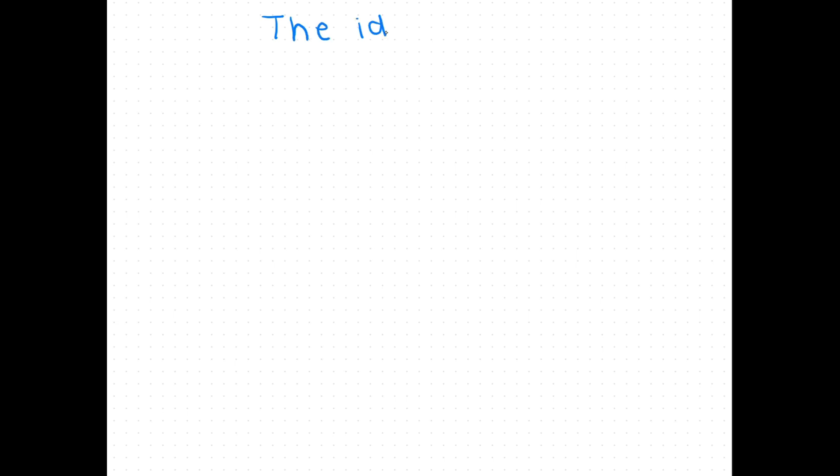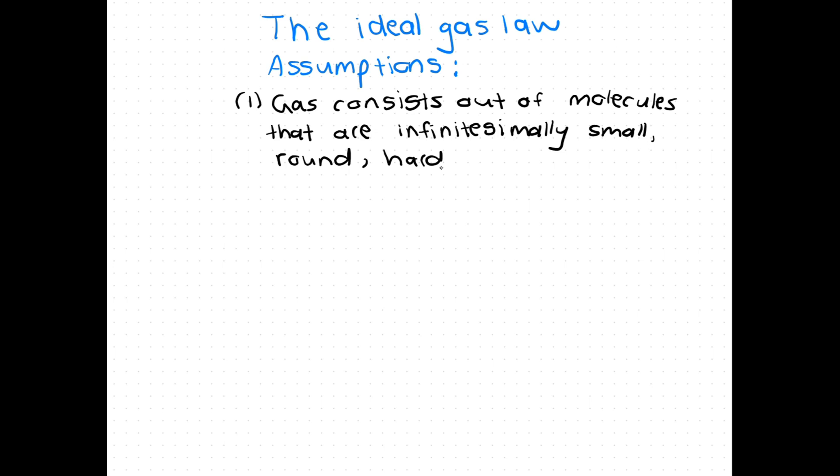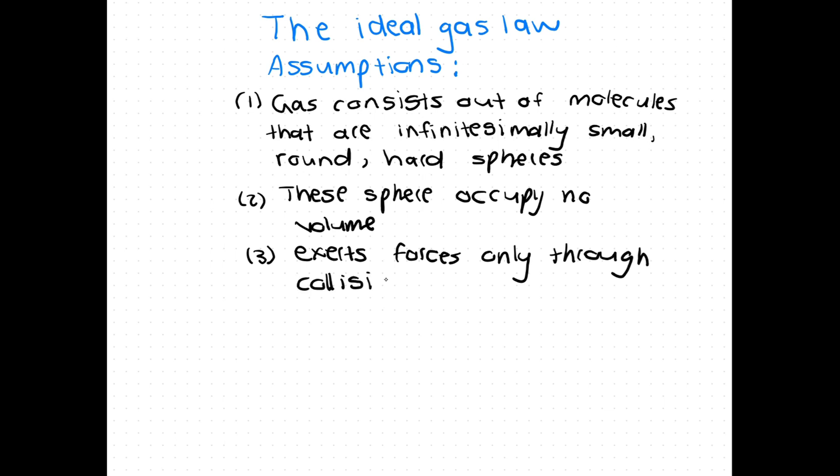Lastly let's look at the ideal gas law. The ideal gas law is the most famous and simplest equation of state. An equation of state is an equation that relates the properties pressure, temperature and volume. The ideal gas law is based on a few assumptions. Firstly, gas consists of molecules that are infinitesimally small, hard, round spheres. These spheres occupy no volume and exert only forces through collisions on each other. Here is the equations.